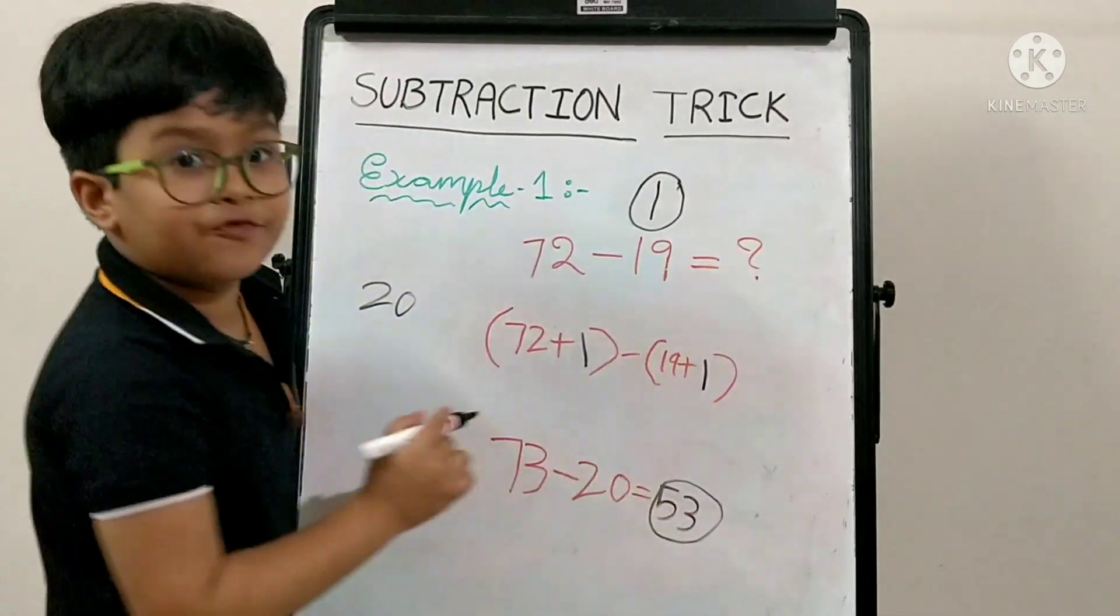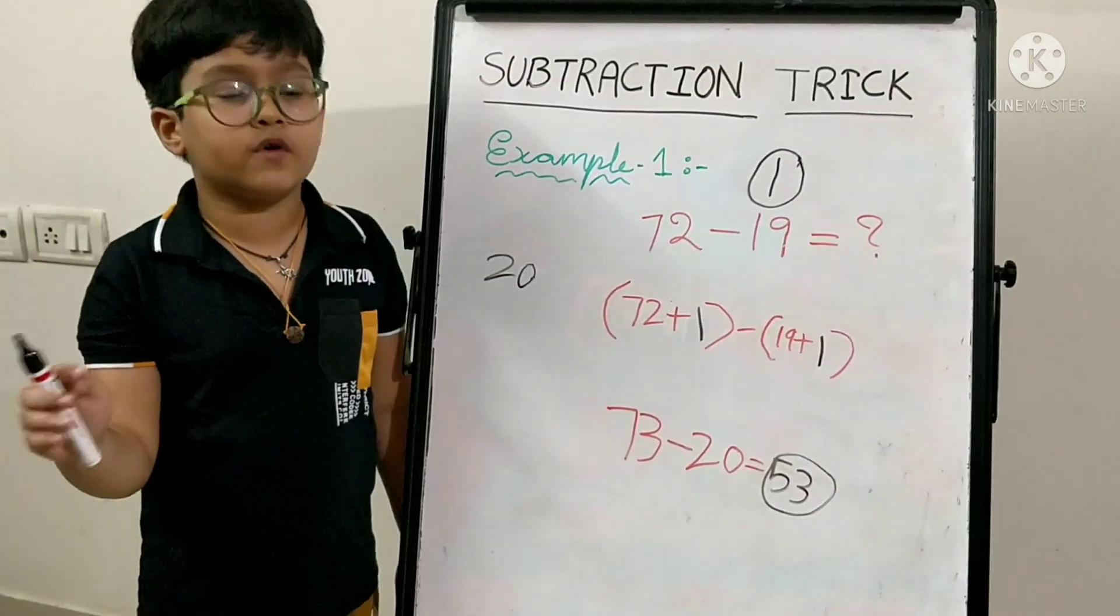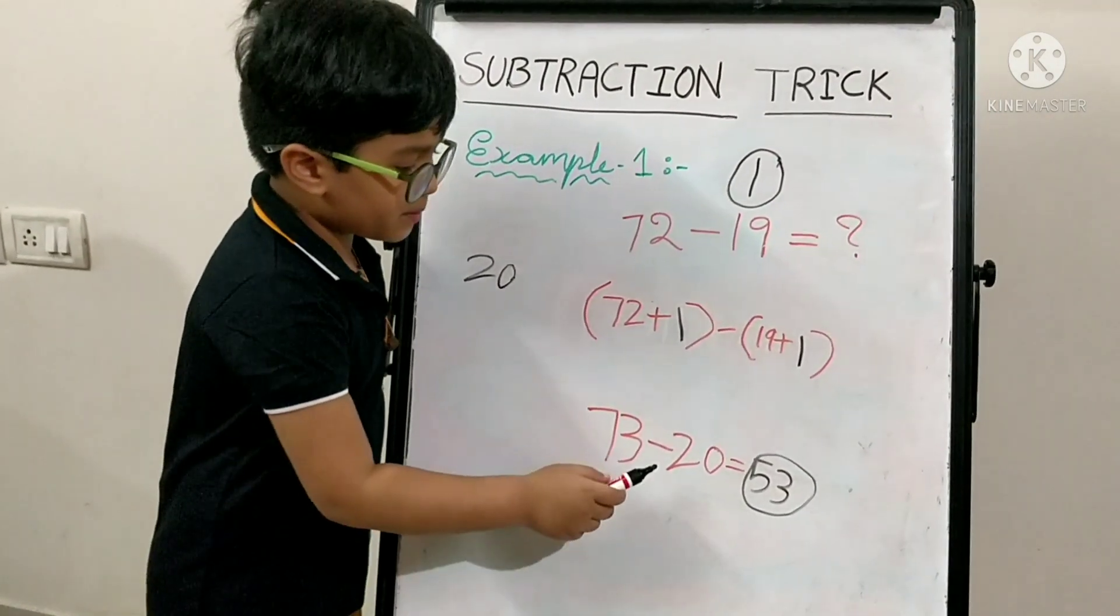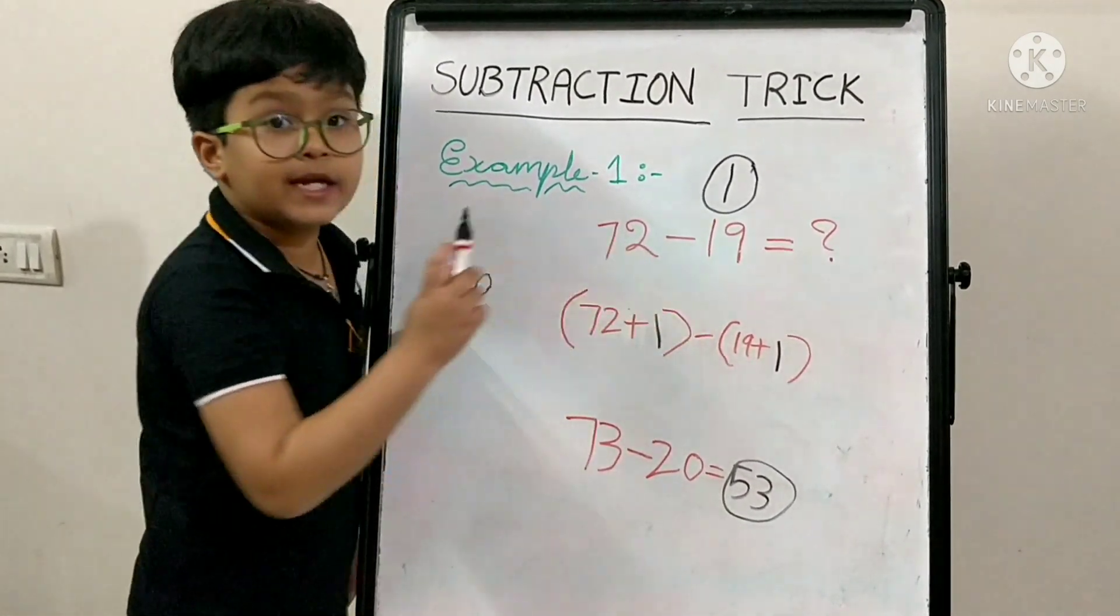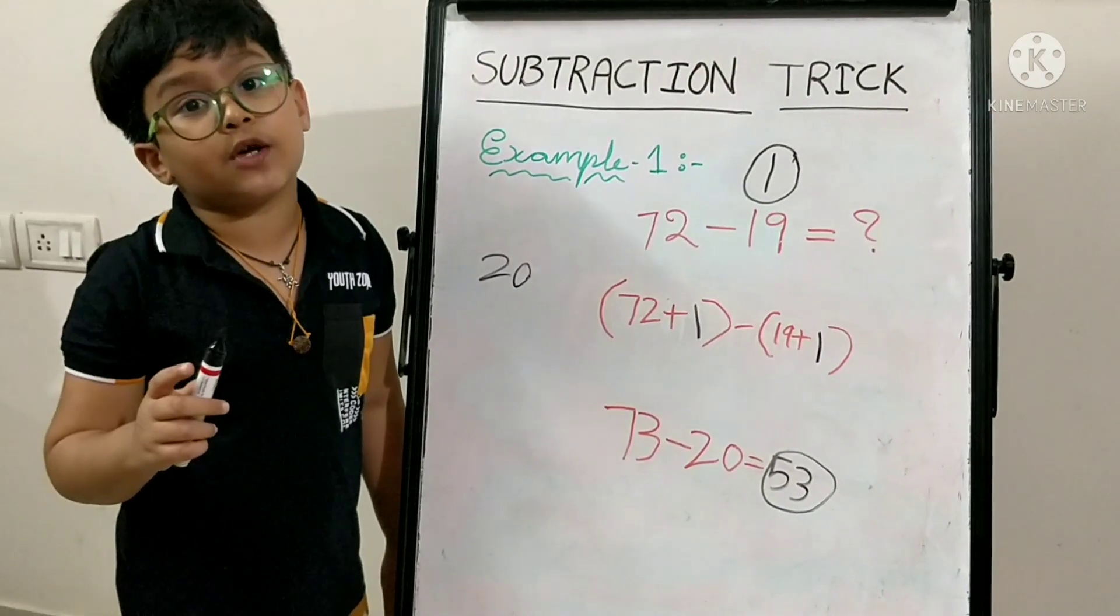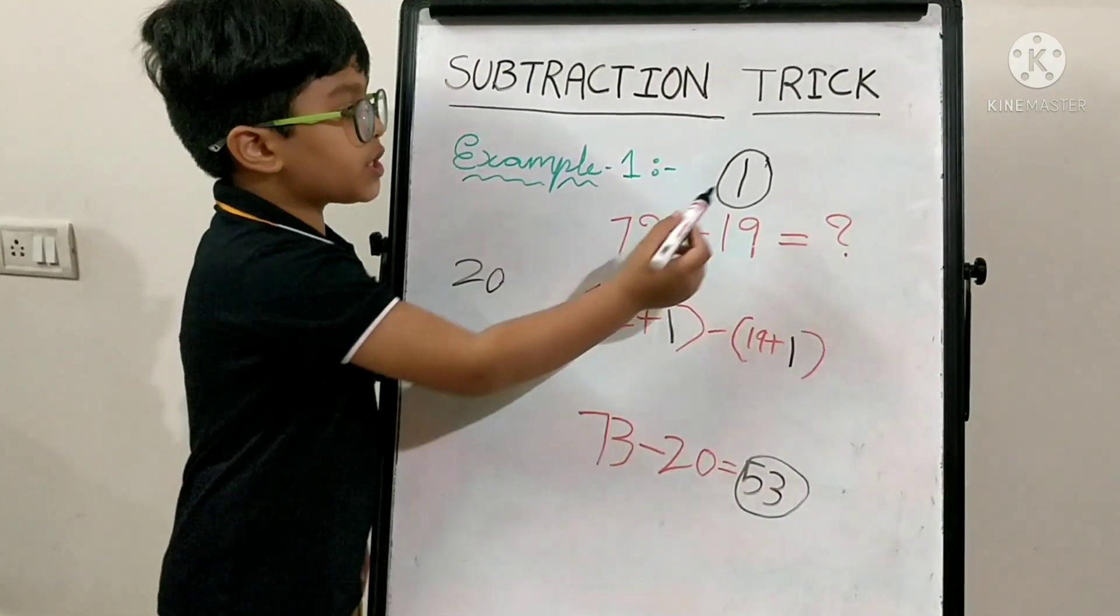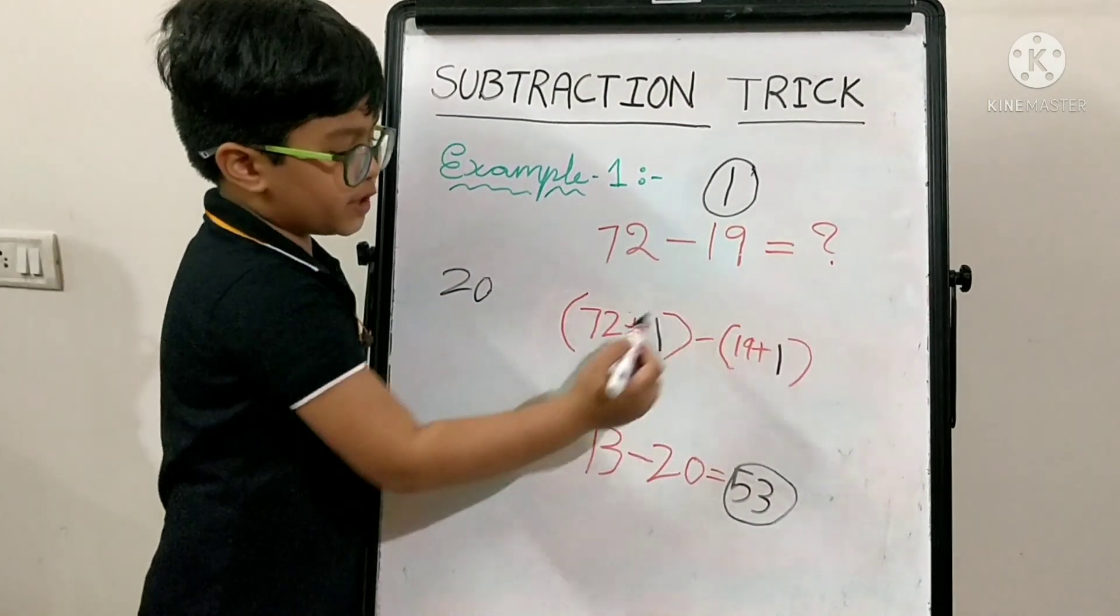Our answer is 53. Don't get confused. 73 minus 20 and 72 minus 19 both are equal because we are just adding one to both of these numbers.